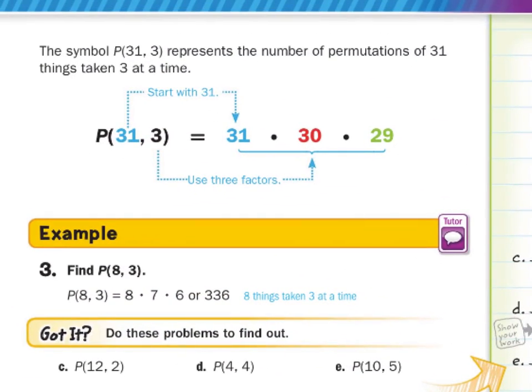The symbol P(31, 3) represents the number of permutations of 31 things taken three at a time. And so the way we're going to solve a problem that looks like this is we'll start with the 31. And we're taking three at a time. So 31, then 30, then 29. If you think back to our runners example, we had, or it could have been written as P of seven different, but taken just with three. That ended up being seven times six times five. So when we look to find P(8, 3), the permutation of eight things taken three at a time, that would be eight times seven times six, which is 336.